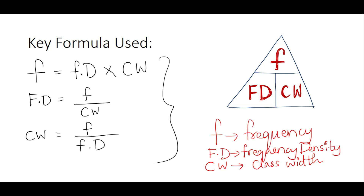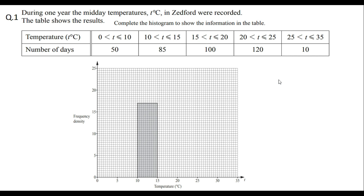Let's move on to exam-style questions. Question one: During one year, the midday temperatures in degrees Celsius were recorded, and the table shows the results. Complete the histogram to show the information in the table. The y-axis shows frequency density and the x-axis shows the temperatures recorded. The table gives the frequency for each class interval.